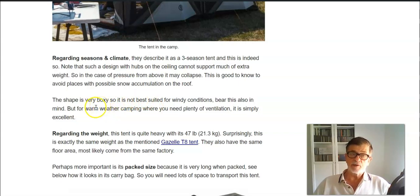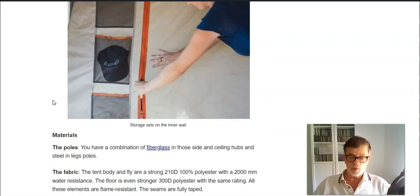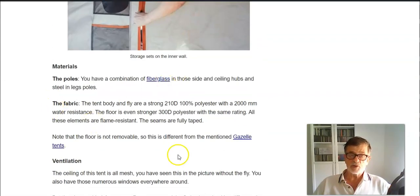I didn't say anything about the materials, just to stress that all the poles that you have are fiberglass, so they are integrated into the tent structure. You will not deal with them except those poles that are around the doors, and those are steel leg poles. The fabric is very strong, 210D, and this is polyester with 2000 millimeters waterproof rating. The floor is even thicker, 300D value, and the same waterproof rating.